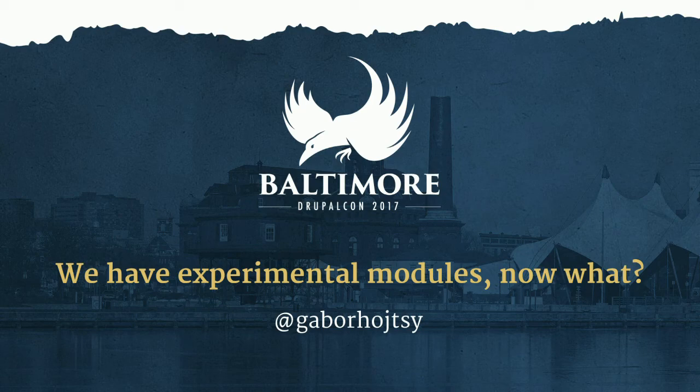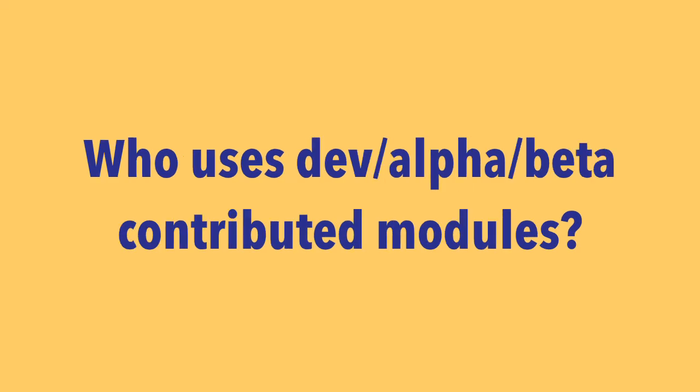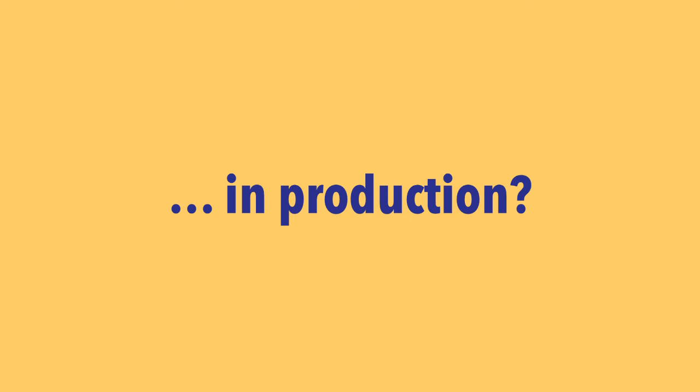I'm Gabro Hoichi on Twitter and Drupal.org. First, I wanted to ask a few questions on who used Drupal 8 a year before its release. That's quite a few people. Who uses dev, alpha, or beta contributed modules? Not stable — almost everyone. Who uses core experimental modules? Less, but not so much less. What's in production? Only a couple of you. The core experimental modules are in many ways the same as contrib dev modules — you're just not getting the warning for contrib dev modules, you're getting the warning for core experimental modules.